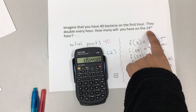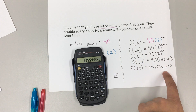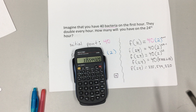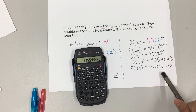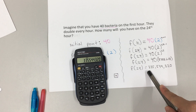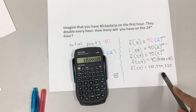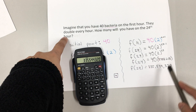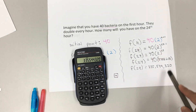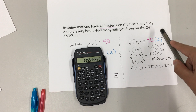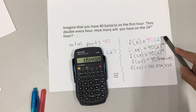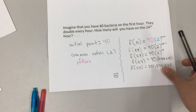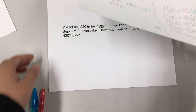That's how many you will have on the 24th hour. As you can see, we then have to do hour one, hour two, hour three — every single hour — because we have the explicit formula. Okay, let's go to another one.